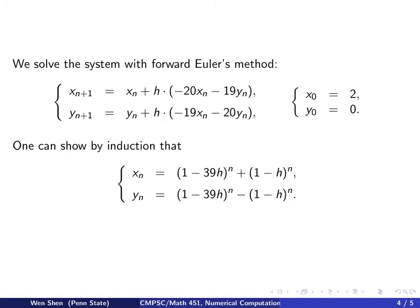This probably is not too surprising because we noticed for the scalar problem, where the exact solution is e to the negative a t, what we get is 1 minus a h to the power n in the discrete solution. So the same thing is happening for the system as well. But you can plug these in and verify that this actually is a solution.